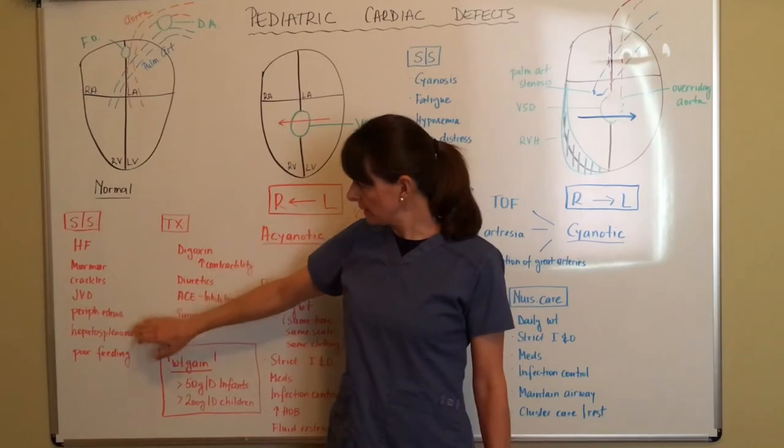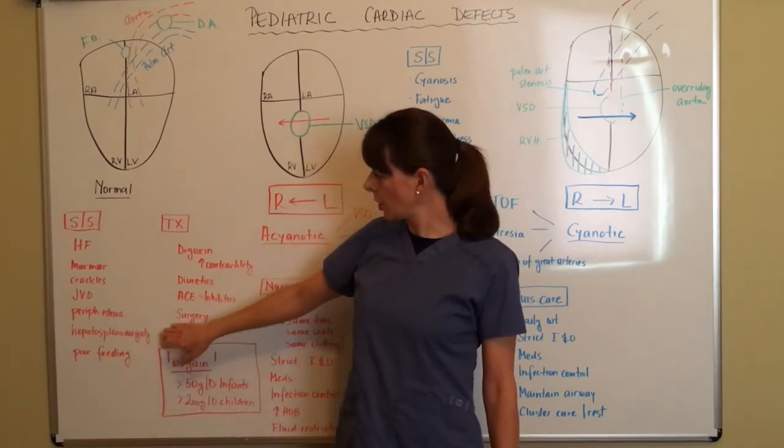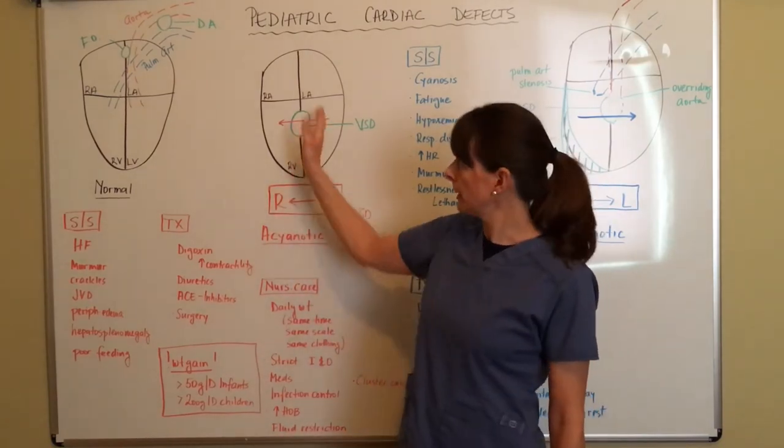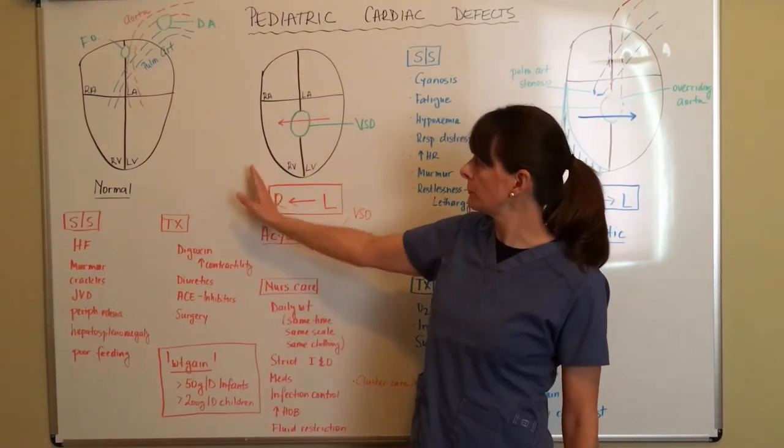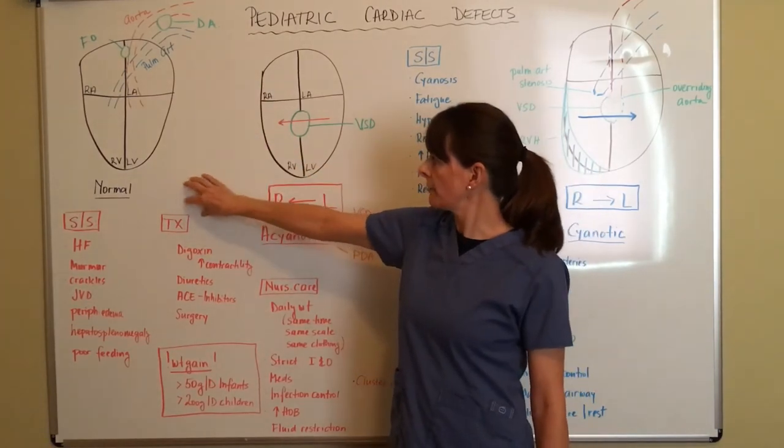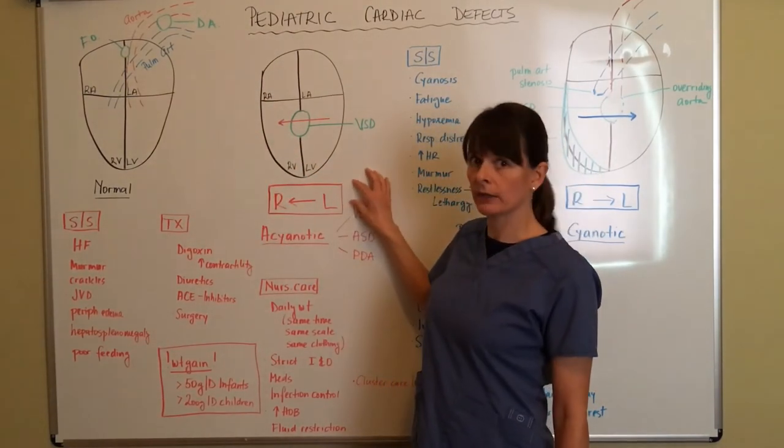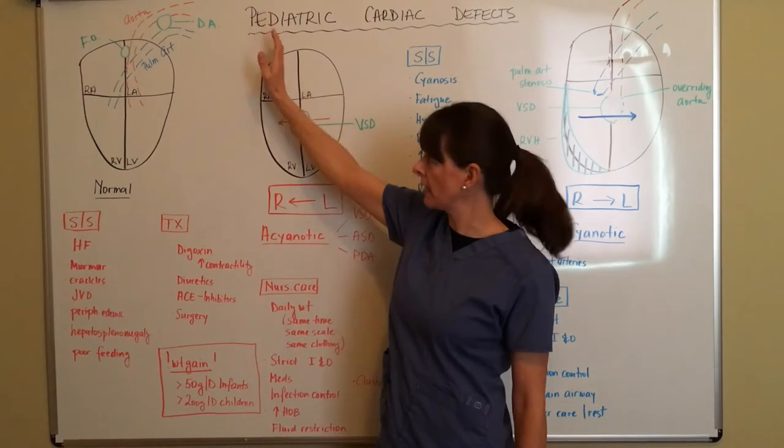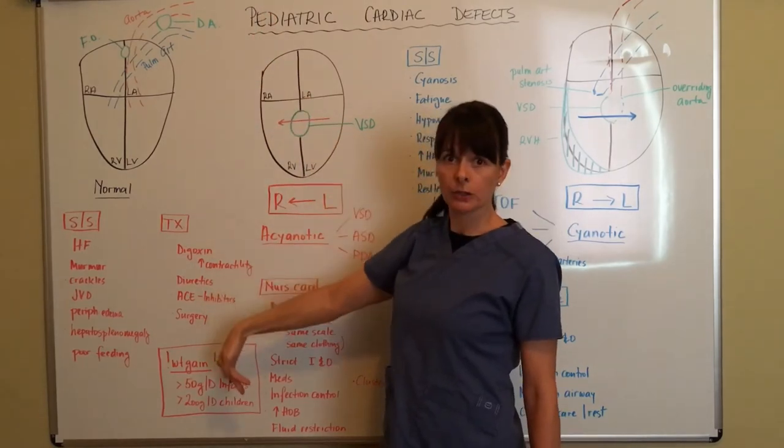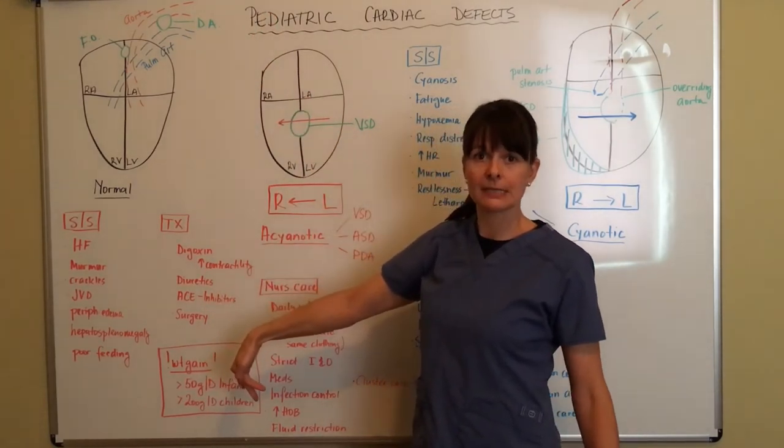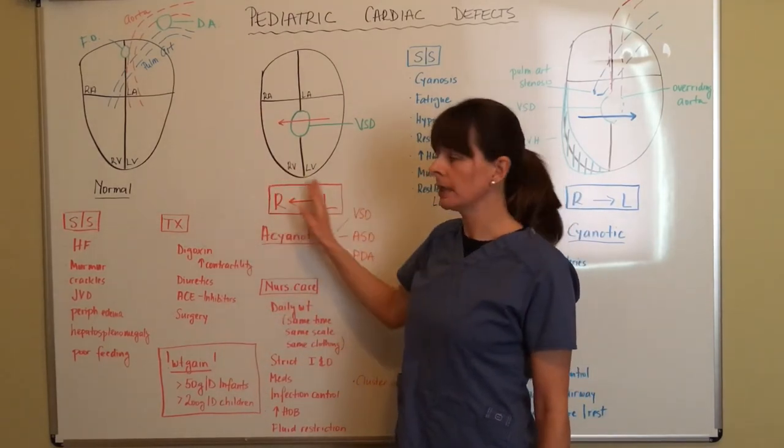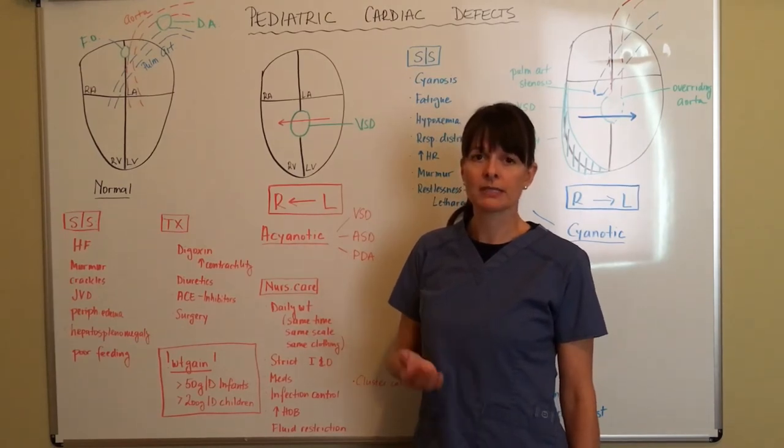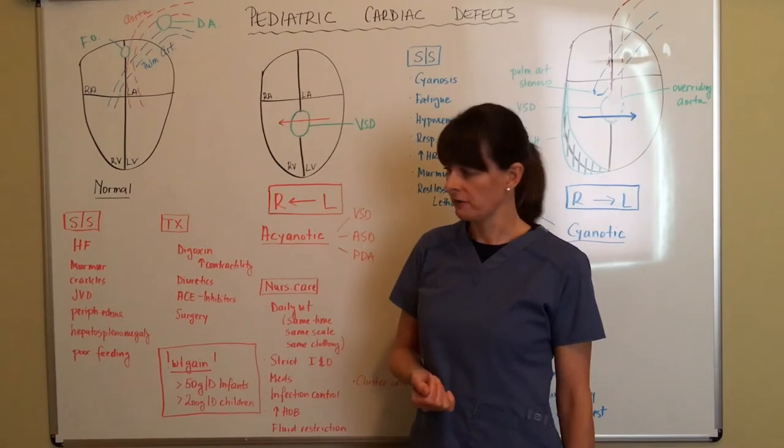Now we talked about crackles, JVD, peripheral edema, and then along with the backing up of the blood, we also have to think about hepatosplenomegaly. So the organs that are perfused before the blood returns to the heart here are the liver on the right and the spleen on the left side. So if there's backup, just like the fluid would be backing up into the jugular vein, into the periphery down in the lower extremities, and we can have some edema as assessment findings, it'll back up into these two organs causing hepatosplenomegaly, which is pretty typical, but it's a pretty significant sign of heart failure.